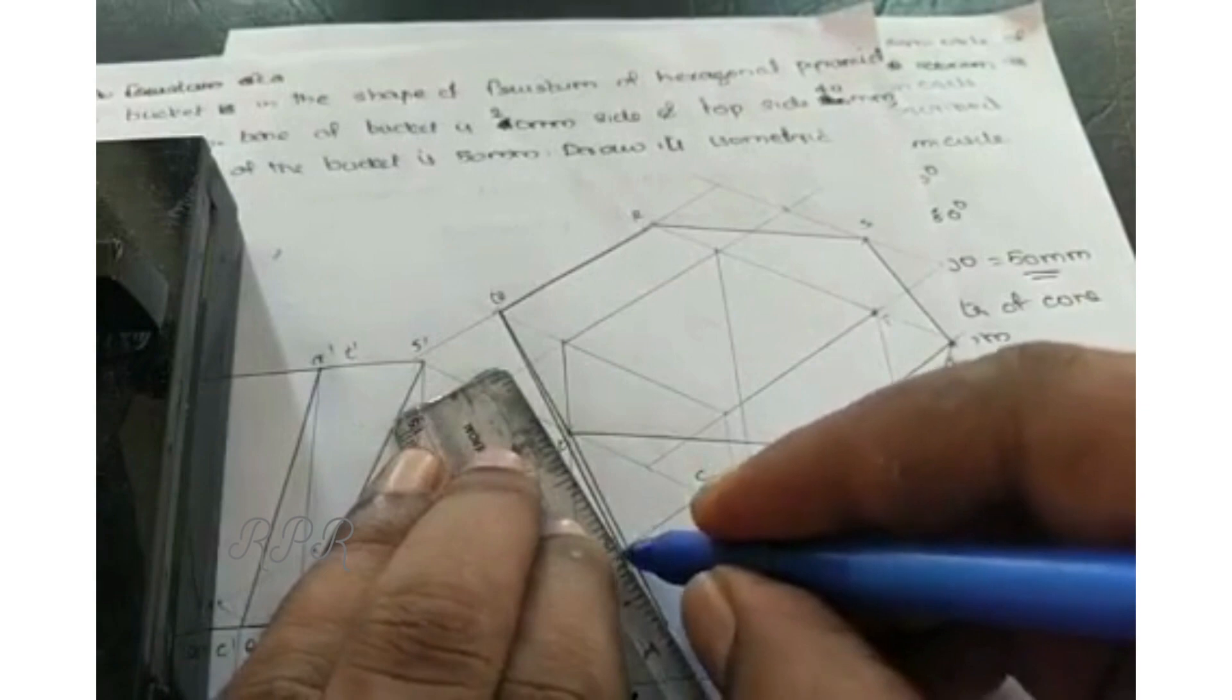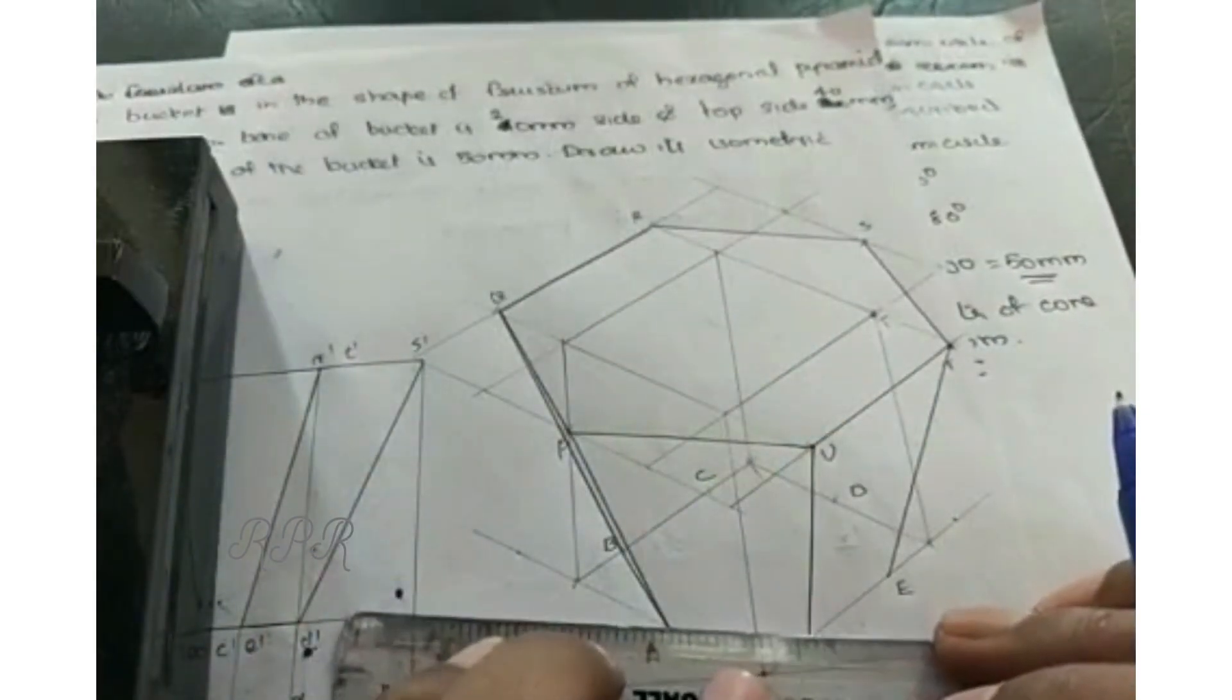These are the visible lines. All other lines will be invisible lines, hidden lines.